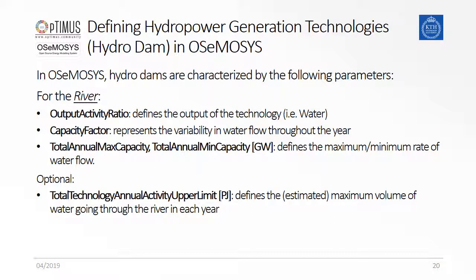The definition of the technology that represents the river doesn't require the use of many parameters. The output activity ratio is set to 1 for the fuel water to indicate that the output of the technology is water. With the capacity factor, the availability of water is considered. It is also important to define the total annual max capacity since it indicates the size of the river, which of course is not increasable. Additionally, there is also the option to limit the total annual flow of the river by using the parameter total technology annual activity upper limit.